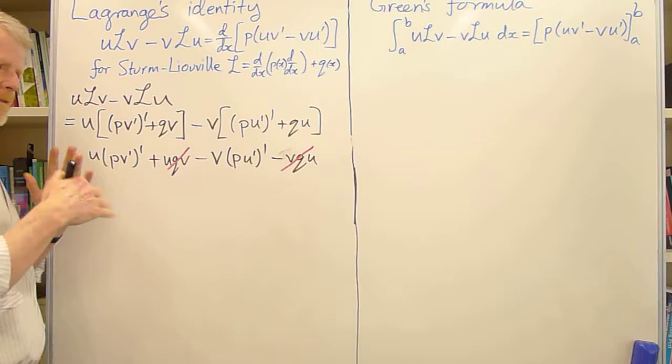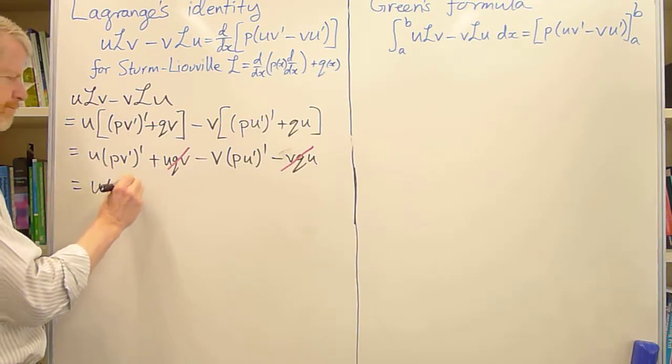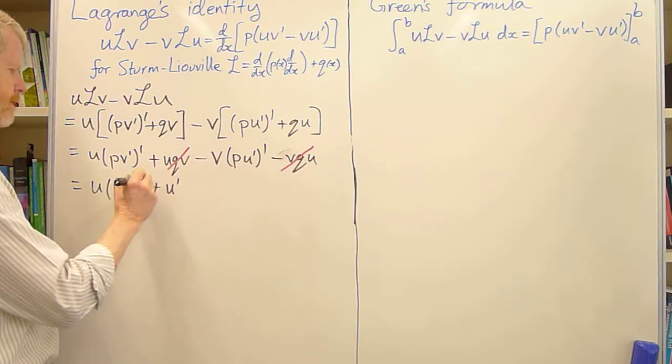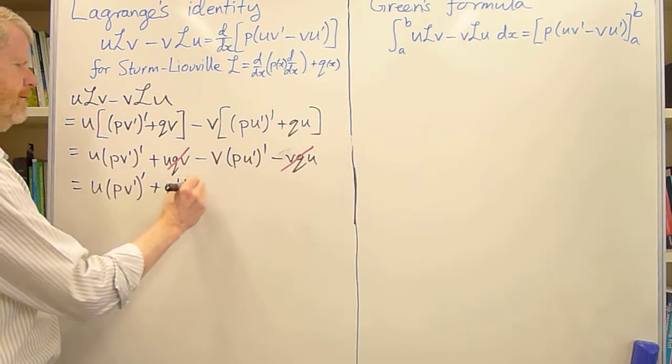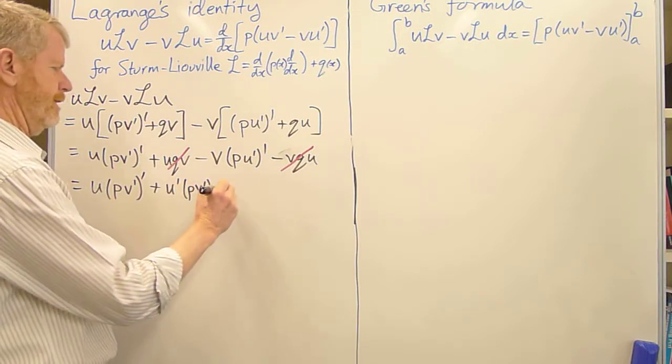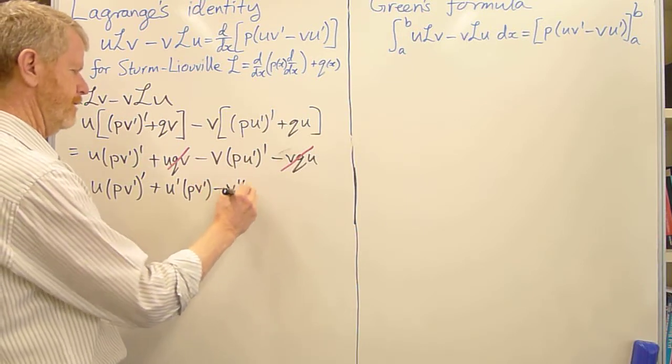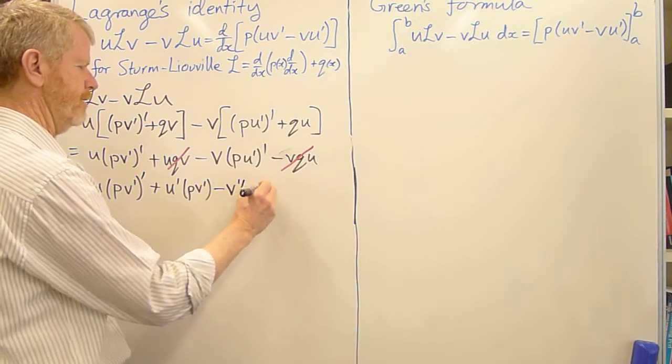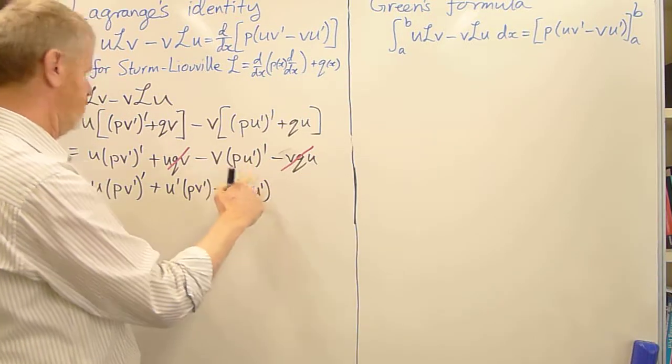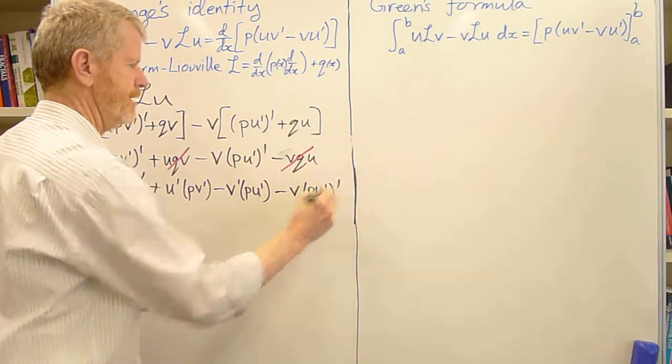Now, to make the next step we add something and subtract something, and the thing we add is u'pv' and subtract it away again. And we subtract it away again in the form v'pu'. And then finish off with minus this last term minus vpu''.